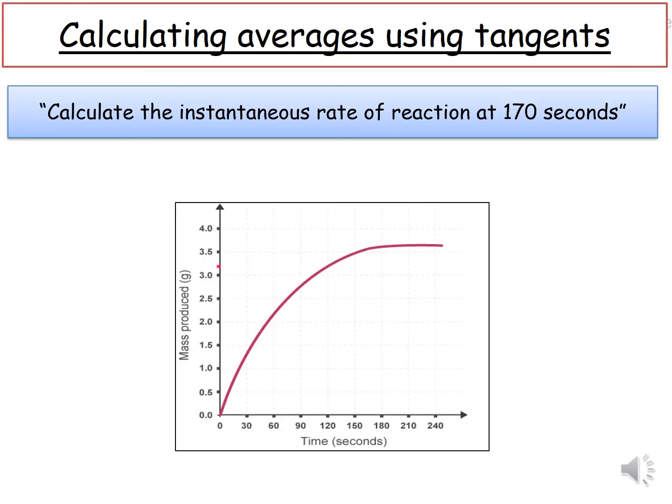Here's an exam question for you to try. Get a sheet of paper, sketch the graph as shown here, and have a go at doing this question. It says, calculate the instantaneous rate of reaction at 170 seconds. Pause the video, have a go, and then we'll go through your answer.